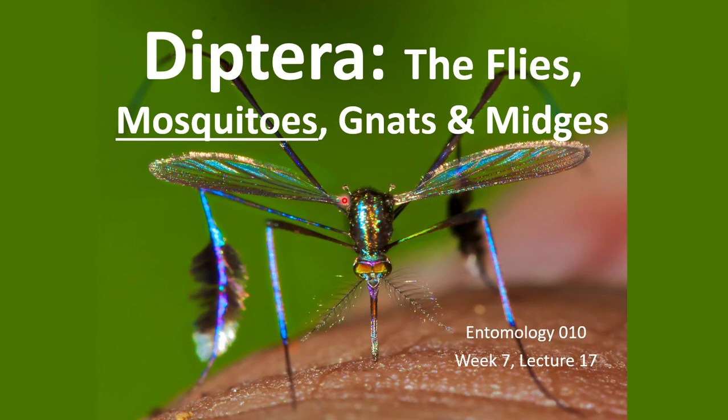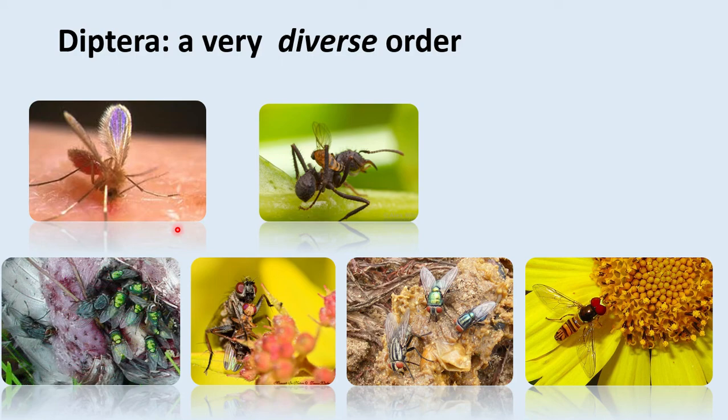To reiterate, we started discussing Dipteran insects last week — those include flies, midges, gnats, and mosquitoes. Today we'll be going over mosquitoes. Diptera is a very diverse order, as we started discussing last lecture. They have many types of adult mouth parts, larval mouth parts, and the feeding strategies can be quite different. Mosquitoes are another organism in this order that adds to that diversity.